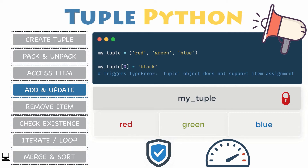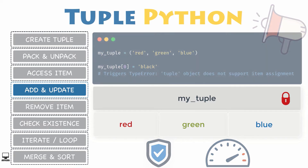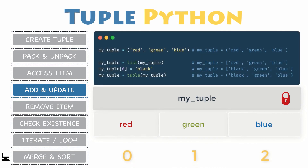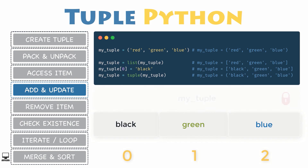Consequently, when you use this kind of data type, you are not supposed to add, update, or remove items from a tuple. But there is a workaround: you can convert the tuple into a list, which is a mutable type, change the items in the list, then convert the list back into a tuple.